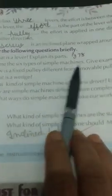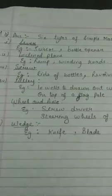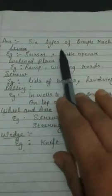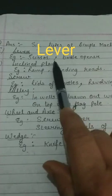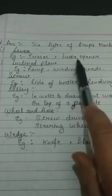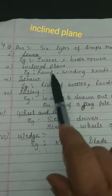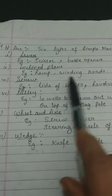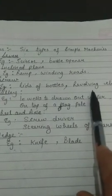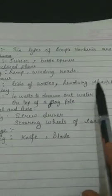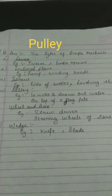Part B: Name the six types of simple machines. Give examples of each. Note down six types of simple machines. First, lever - example: scissor, bottle opener. Second, inclined plane - example: ramp, winding roads. Third, screw - example: lids of bottles, revolving chairs. Fourth, pulley - example: in wells to draw out water, on top of a flag pole.